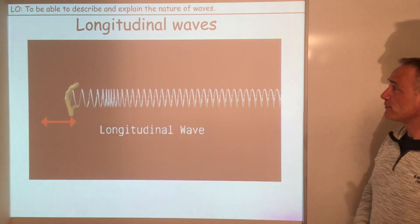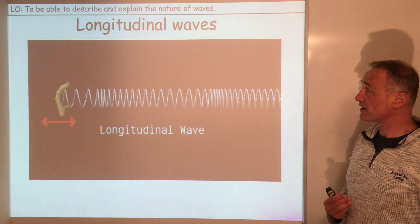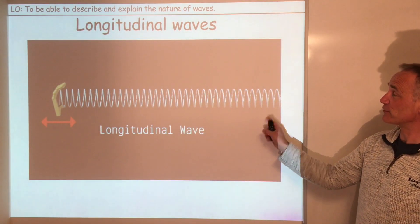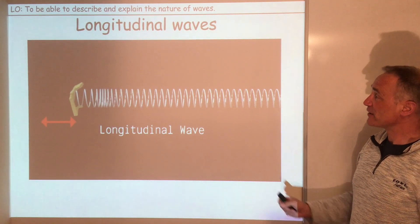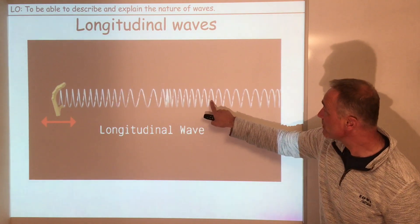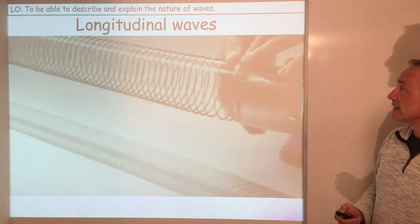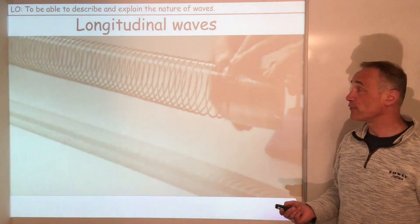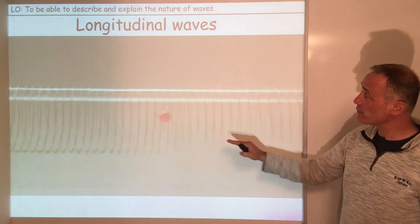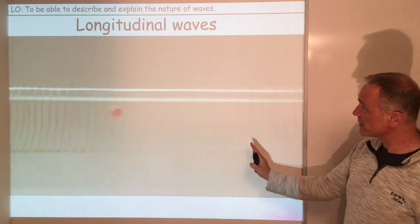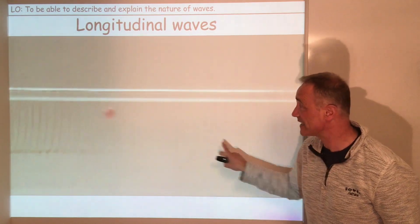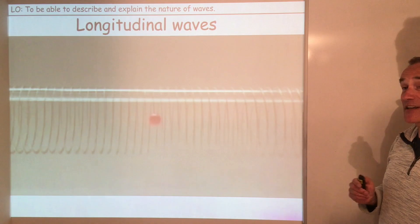Longitudinal waves. These are the other type of wave. You can see this time the oscillations are parallel to the direction in which the wave travels. And you can see we've got these compressions which are high pressure, and these in the middle which are low pressure. To make a longitudinal wave, you're going to have to move the slinky parallel to the direction in which the wave is going to move. And you can just about see these compressions going through. That point is just oscillating backwards and forwards, parallel to the direction of the wave.